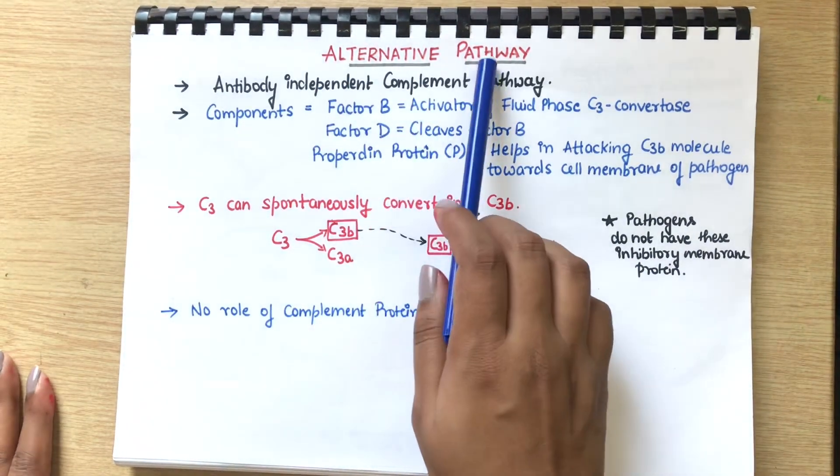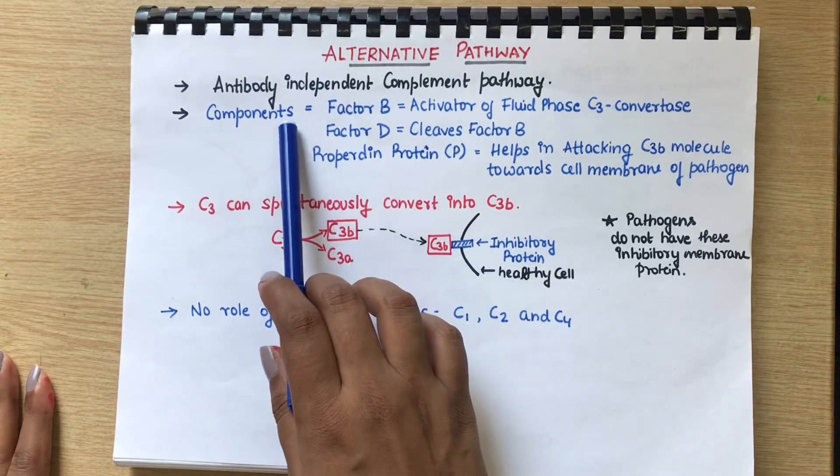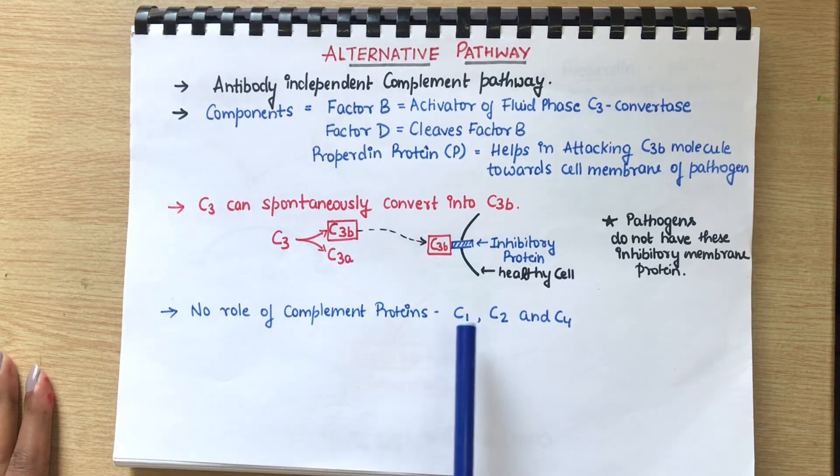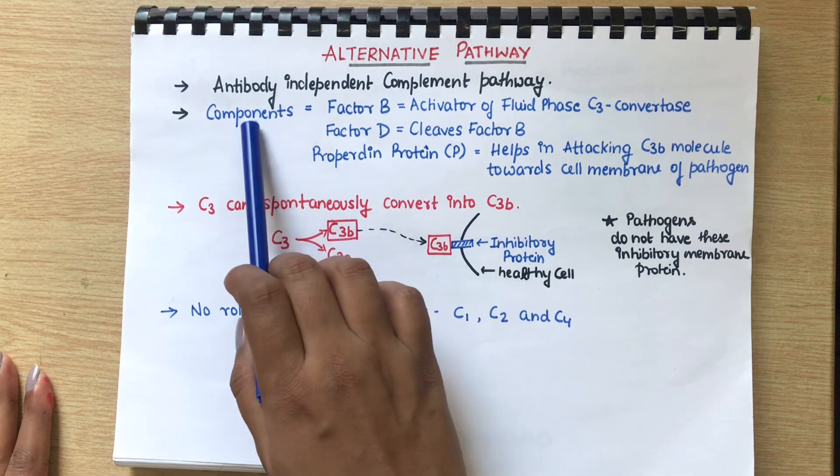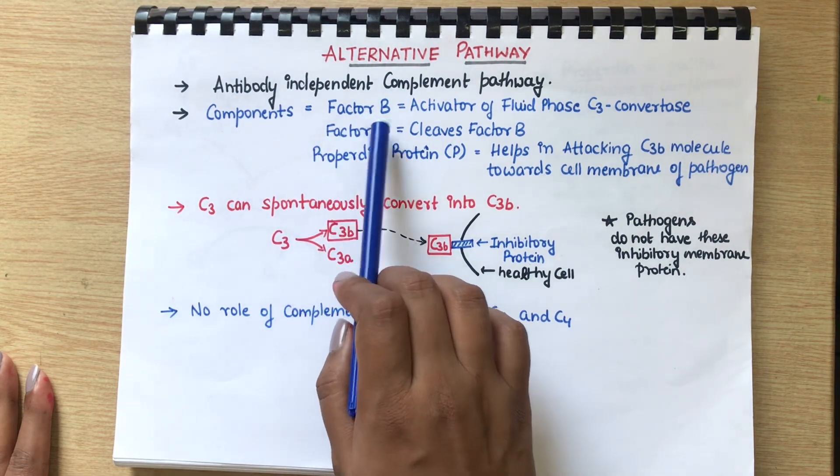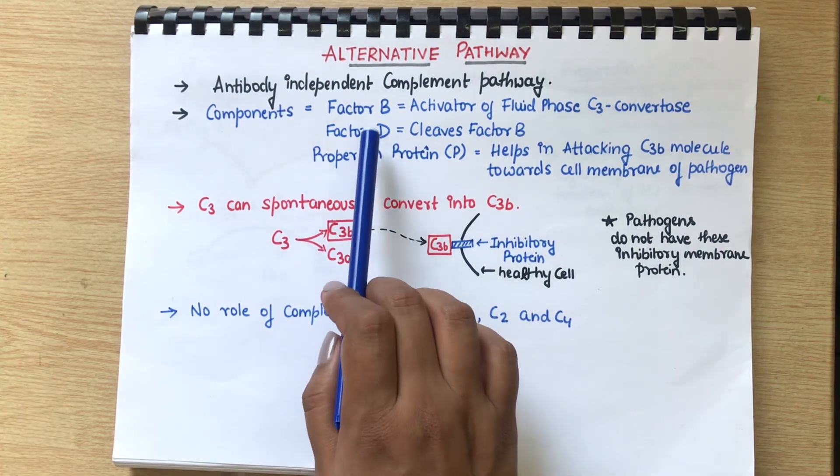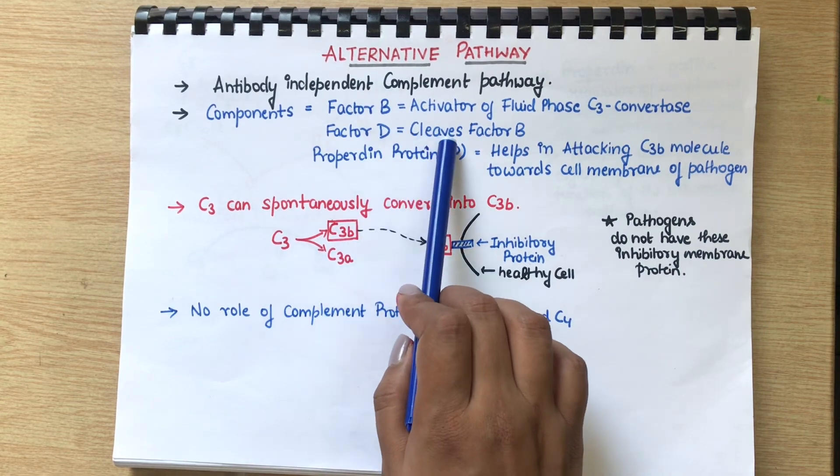Components involved in the alternative pathway are the complement proteins, but except for C1, C2, and C4. Then we have components like Factor B, Factor D, and properdin. Factor D is responsible for the cleavage of Factor B.